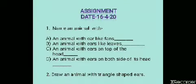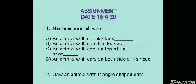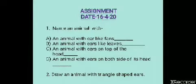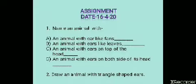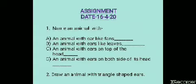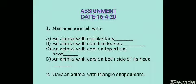So, we have learnt that in animals the size, shape and position of the ears is different. Now, try to answer the questions. Question 1: Name an animal with ears like fans; part b, ears like leaves; part c, with ears on top of the head; part d, an animal with ears on both sides of its head. Question 2: Draw an animal with triangle-shaped ears. Children, complete this assignment and learn the answers with spellings. We will meet tomorrow again. Till then, bye bye.